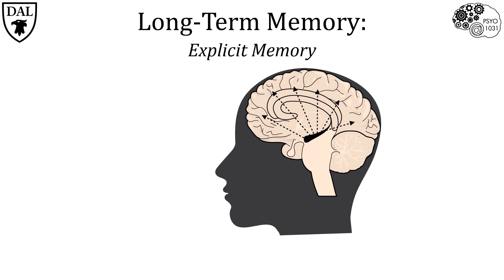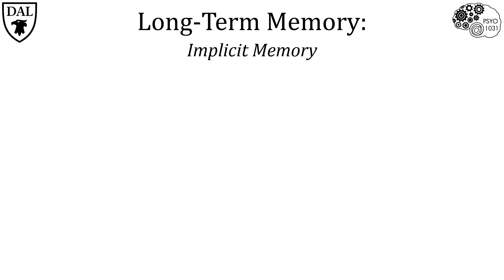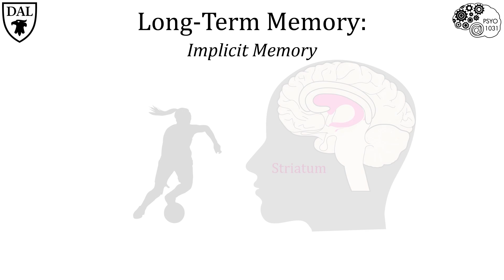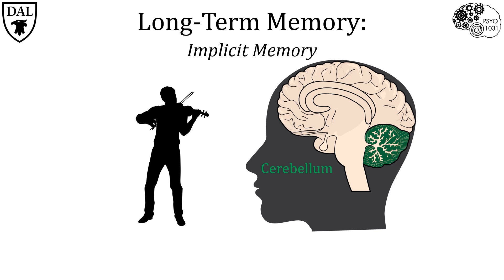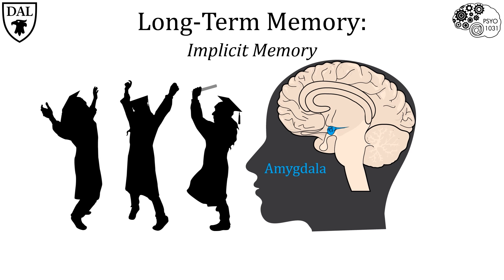But what about memories like how to ride a bicycle, tie your shoes, or why you might drool every time you hear a bell ring? Implicit memories — those for procedural things like playing a musical instrument, habits, and skills — tend to be stored in subcortical structures. The striatum, part of the basal ganglia, handles procedural memories like sports skills and physical habits. The cerebellum is involved in memories for precise movements. And the amygdala is responsible for emotional associations, making us tend to remember emotional stimuli better than neutral ones.